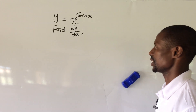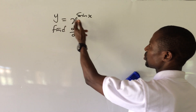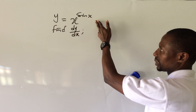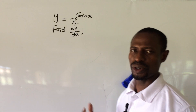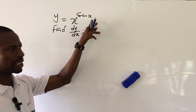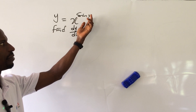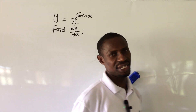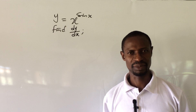Today we have a challenge on differentiation. The question is: y equals x to the power of sine x. Find dy/dx. We want to differentiate the function y with respect to x. Here we have x as the base number and a trig function as the power. This is All I Maths TV and my name is Jake's Animal.